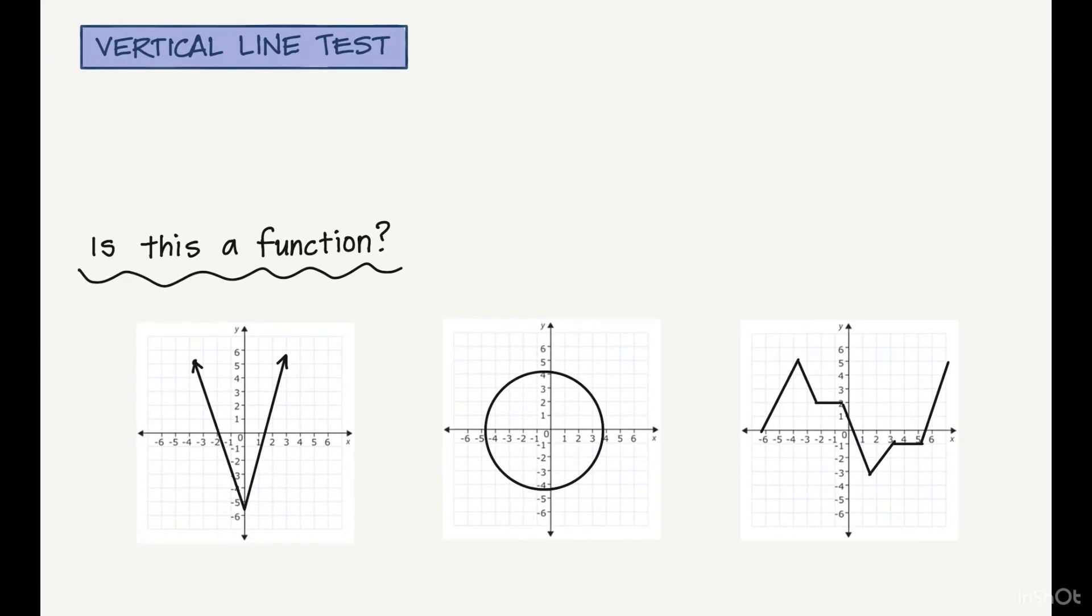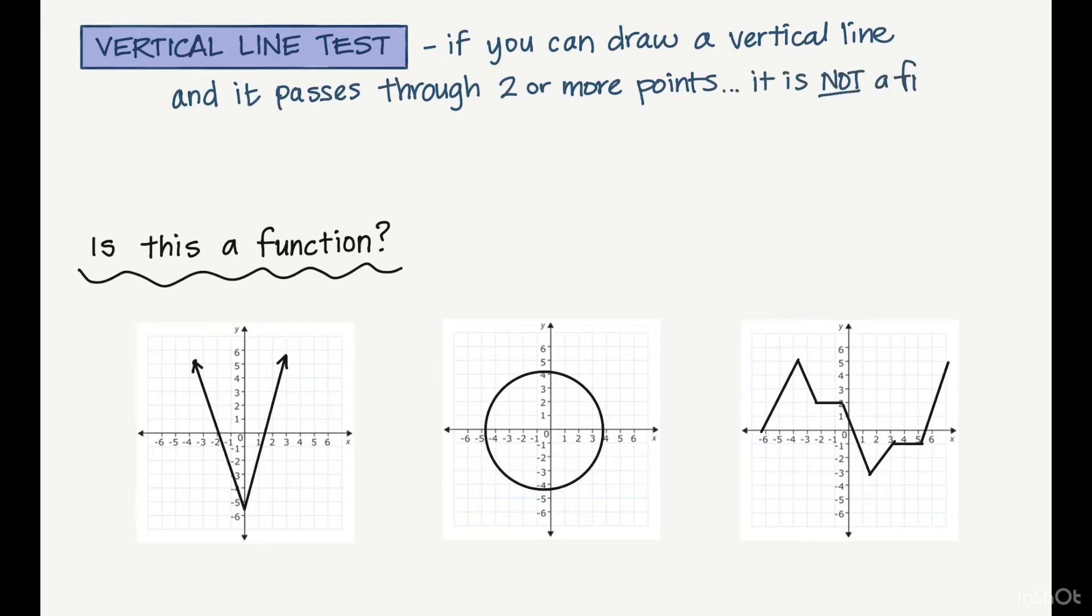Our final thing we're going to talk about is the vertical line test, which is a fast way to see if a picture is a function. Here's the test: if you can draw a vertical line and it passes through two or more points, then it is not a function. What we're going to do is look at these three pictures to tell whether they are functions based on the vertical line test.